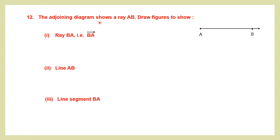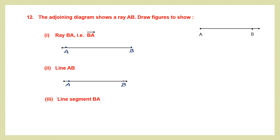Question 12: The adjoining diagram shows a ray AB. We have to draw ray BA — B is the fixed starting point and the other end is A. Then draw line AB, which has two arrowheads to show it is a line. Finally, draw line segment BA — since both ends are fixed, line segment AB and BA are drawn the same way.